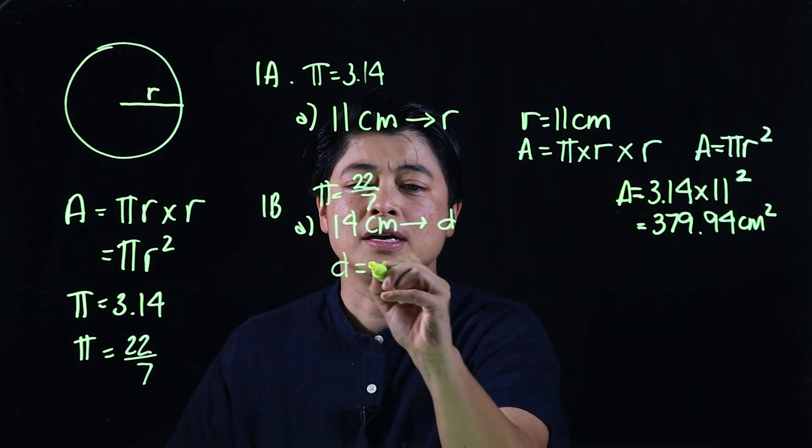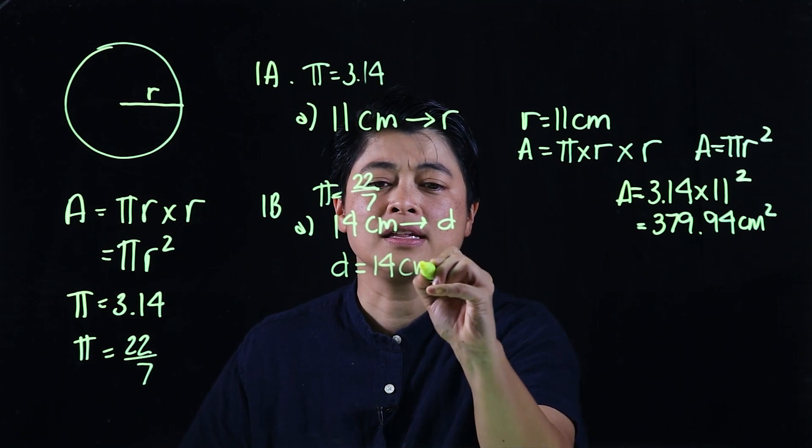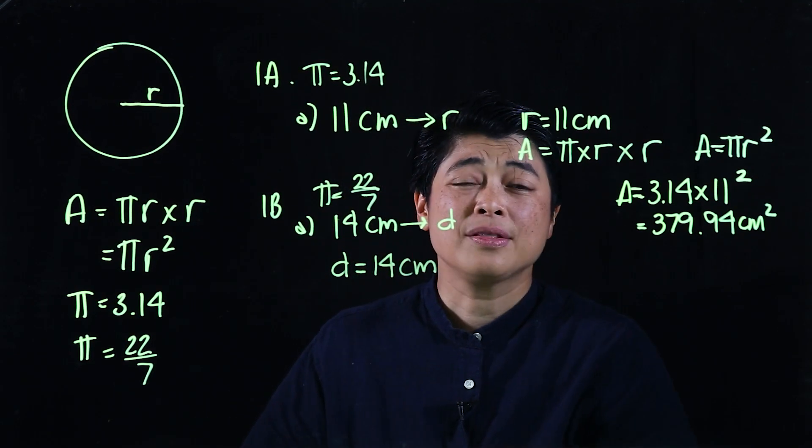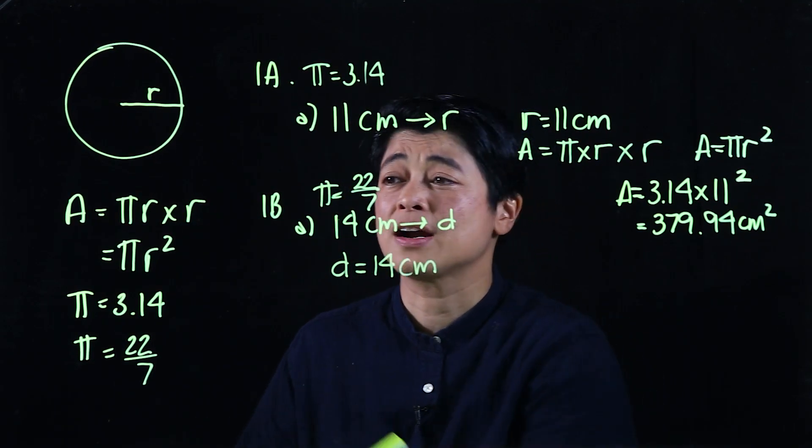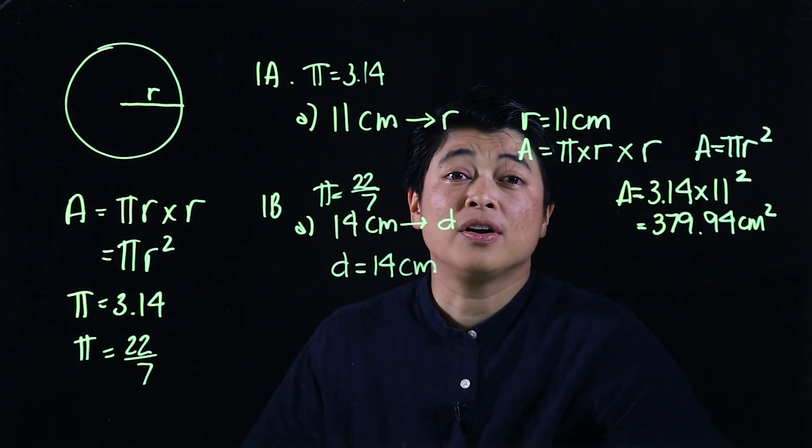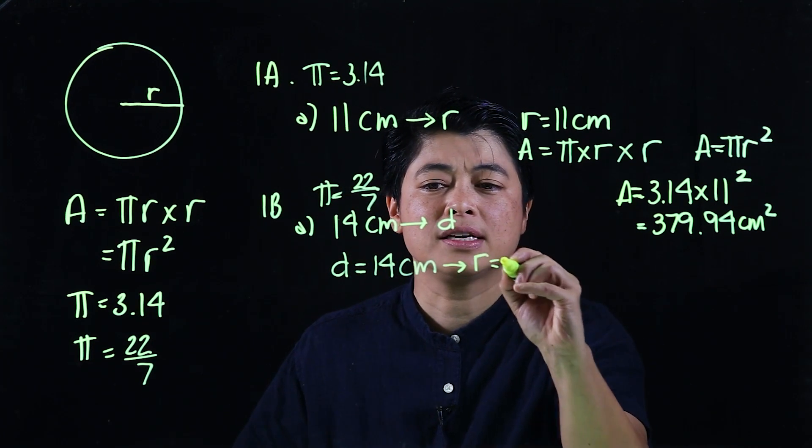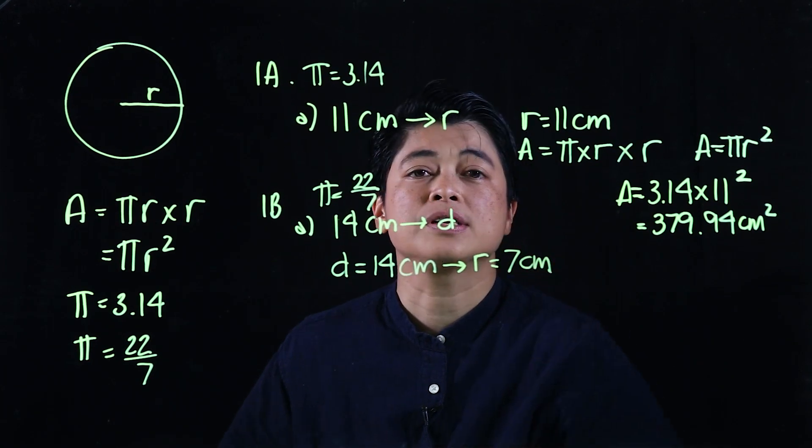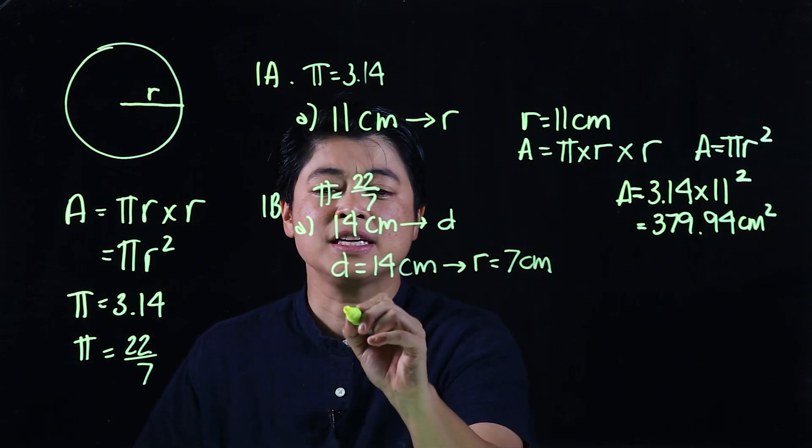We're supposed to find the area, writing down the given diameter is equal to 14 centimeters. Now the thing that we have to remember since our formula only involves radius, what we want to do is say radius is 7 centimeters.